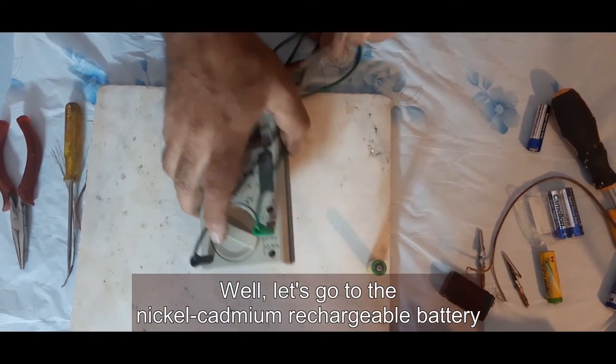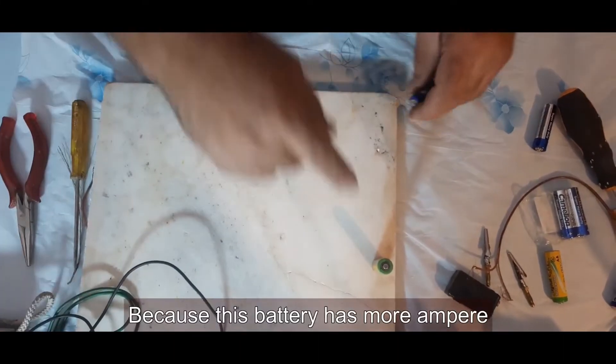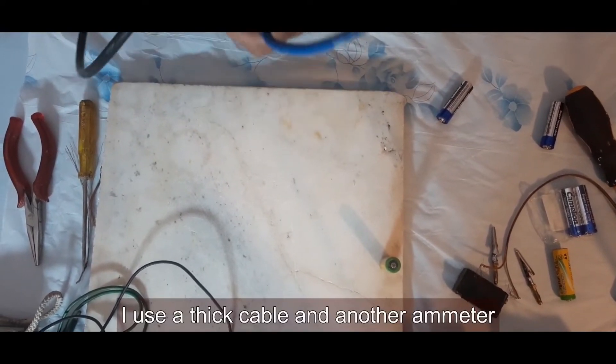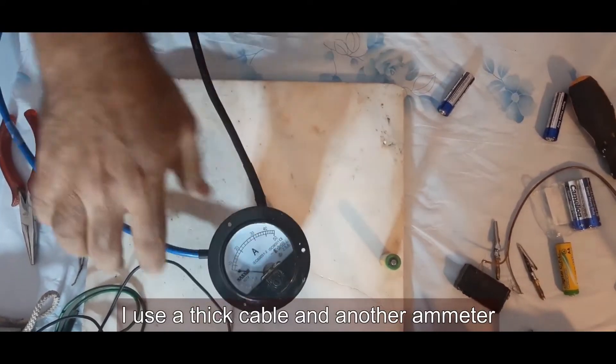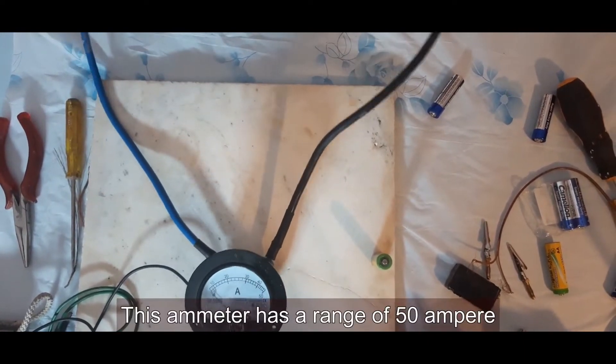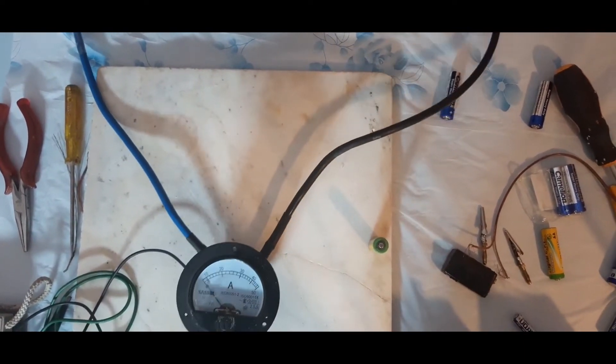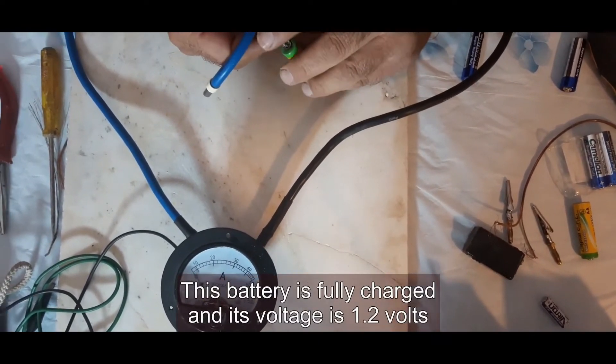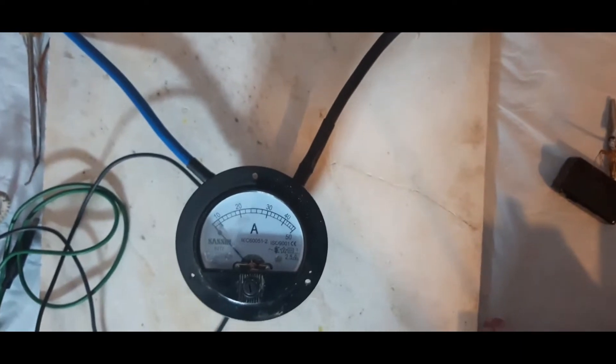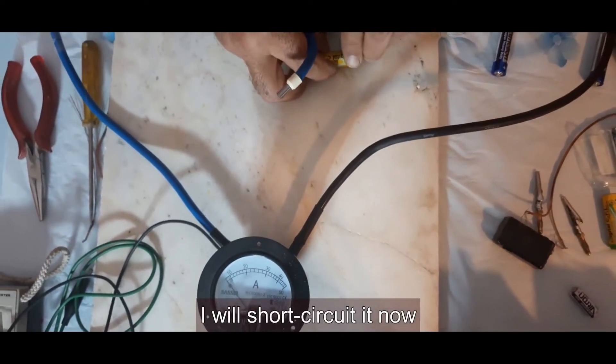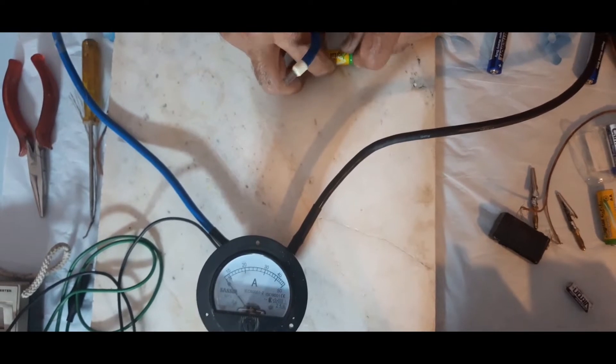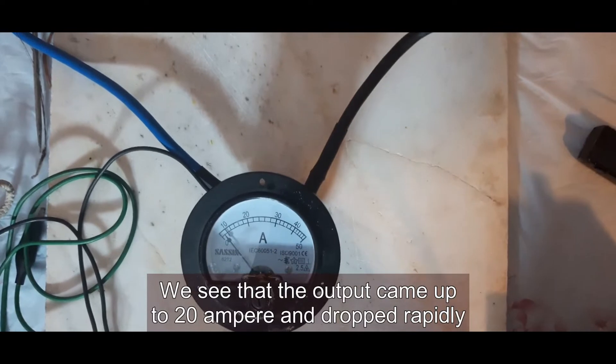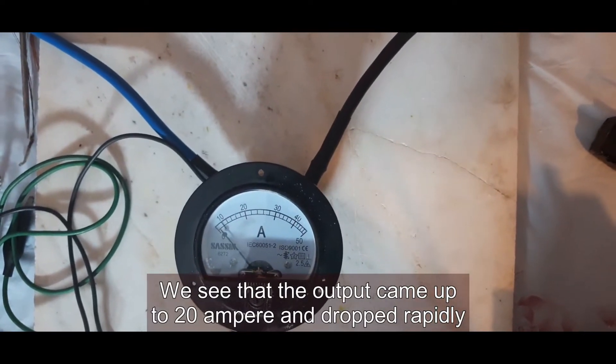Let's go to the nickel cadmium rechargeable battery. Because this battery has more amperes, I use a thick cable and another ammeter. This ammeter has a range of 50 amperes. This battery is fully charged, and its voltage is 1.2 volts. I will short-circuit it now. We see that the output came up to 20 amperes and dropped rapidly.